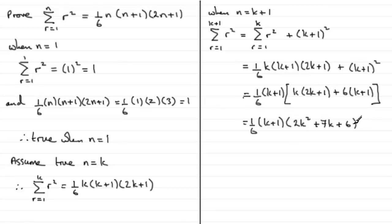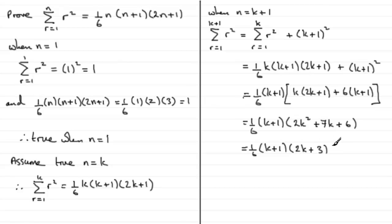Now I can try to factorise this quadratic. We get one sixth k plus 1, and factorising the quadratic gives two factors: one is 2k plus 3 and the other is k plus 2. You can check that out and you'll see that you get the correct quadratic.